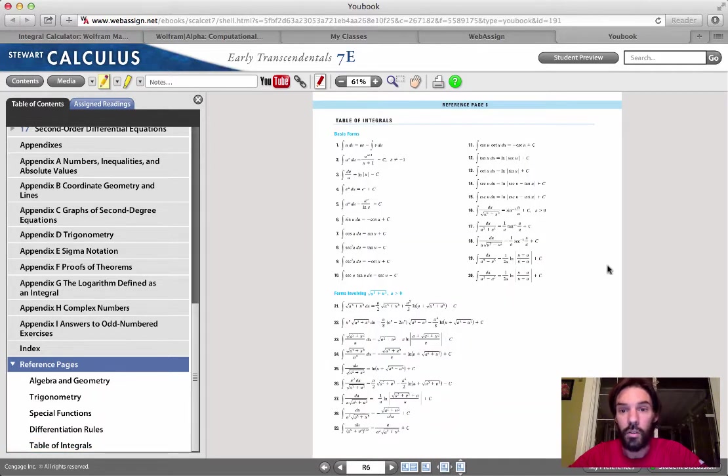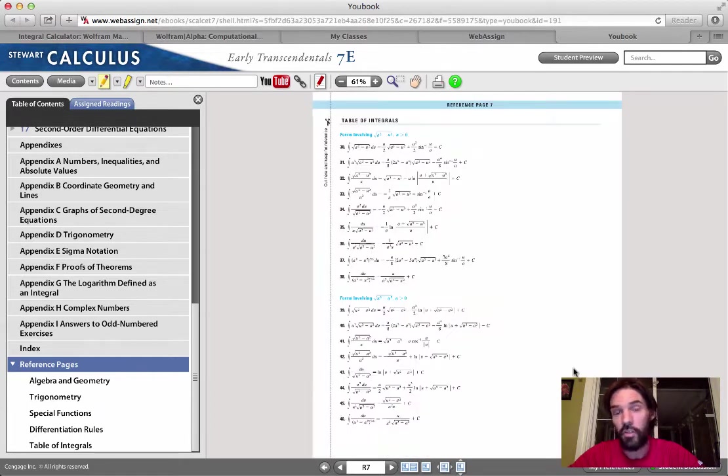Now if you click on that, what you'll get first is the first table of integral, which is a long list of integrals. So these are all basic integrals and then they're separated in different sections. Here these will be integrals involving square root of a square plus u square, where a is a positive constant. And there's actually five pages of such integrals.